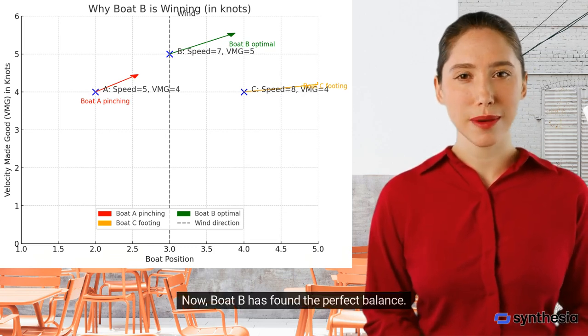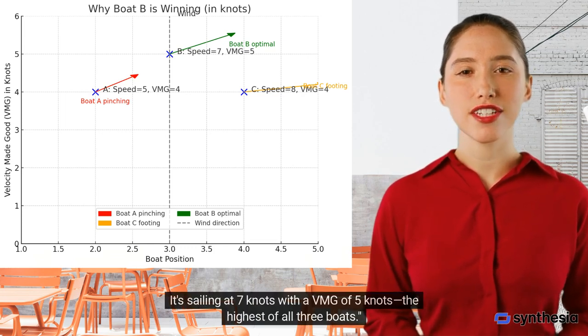Now, boat B has found the perfect balance. It's sailing at 7 knots with a VMG of 5 knots, the highest of all three boats.